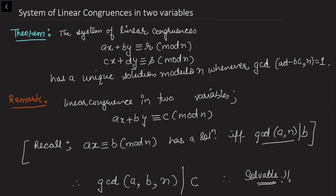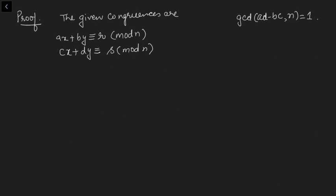Now let's come to our main problem. The system of two linear congruences in two variables has a unique solution whenever gcd(ad - bc, n) = 1. This assumption is given to us: whenever gcd(ad - bc, n) = 1, the system should have a unique solution. Let's now prove this.